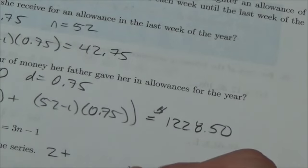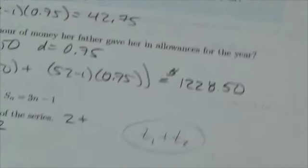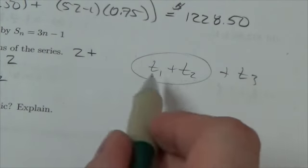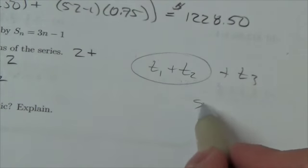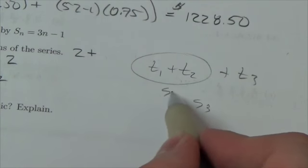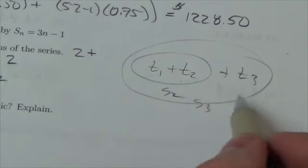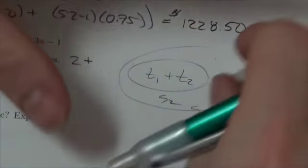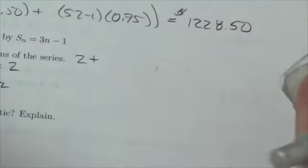So you think of it like this, here's the first term, here's the second term, add those together. The sum of these three terms, this is S3. The sum of those two, that's S2. So that's S3, that's S2. The difference between them is that third term. And that is really the pattern that we're utilizing in this particular question here.